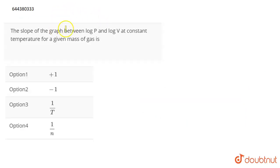The question is: the slope of the graph between log P and log V at constant temperature for a given mass of gas is?